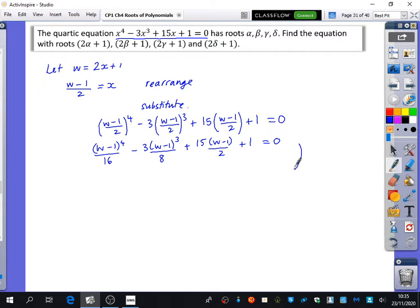Do you have any ideas of what you think I'm going to suggest we do next? Good. We're going to multiply everything by 16 because no one likes working with fractions. If I times everything by 16, I will have (w - 1)⁴. This times 16 would be -6(w - 1)³. This one would be 120(w - 1). Wouldn't it be plus 16? Oh, that's a very good point. I didn't multiply everything by 16. I need to make sure I multiply everything by 16. Thank you very much, Andrew.